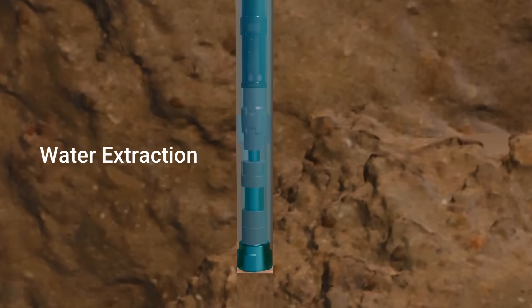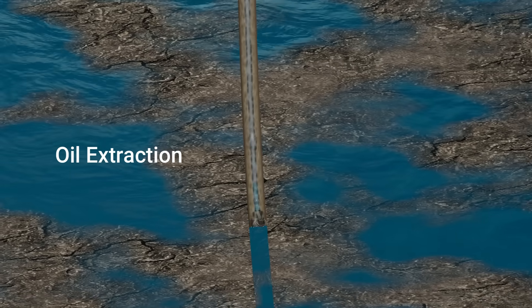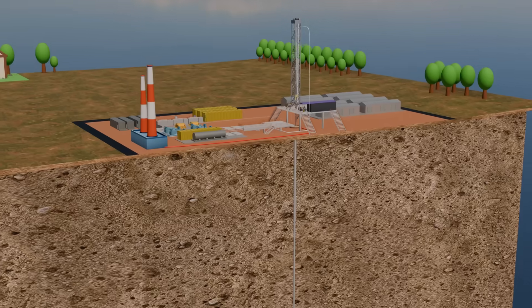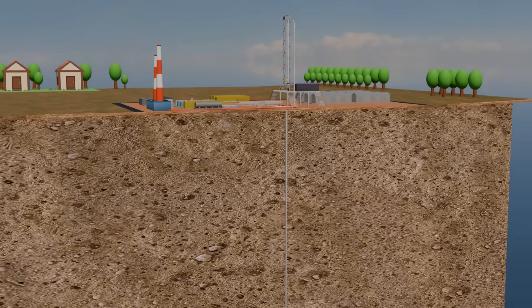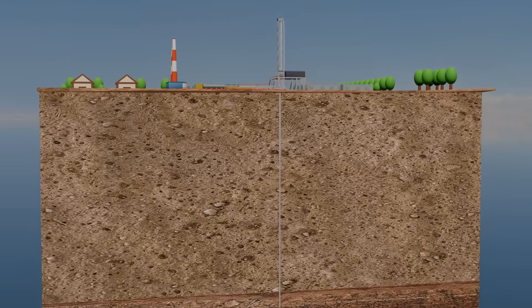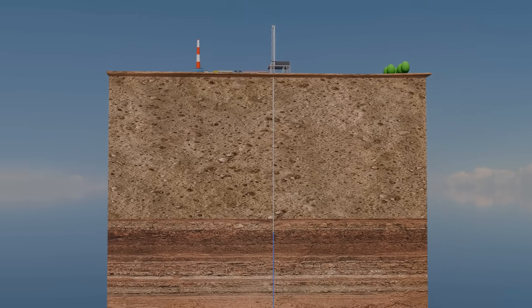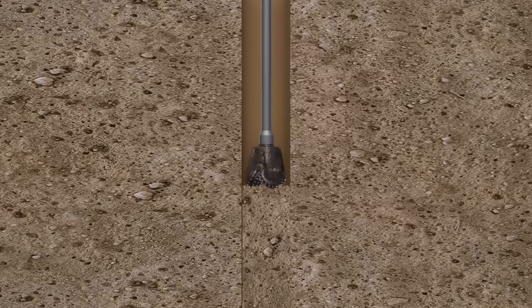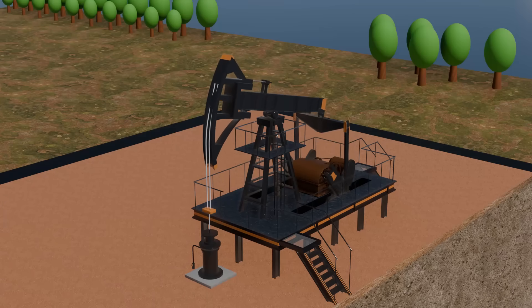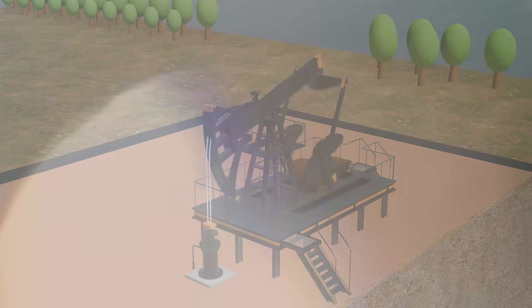Unlike water extraction, drawing oil from the ground is a far more complex and challenging process. In fact, the biggest challenge lies in drilling the oil well itself. In this video, we'll use 3D animation to explain in detail how the wellbore is drilled and how crude oil is extracted from deep within the earth.